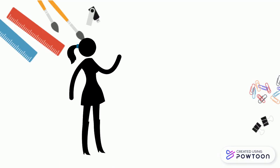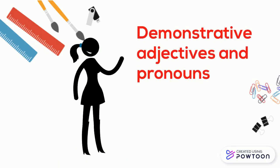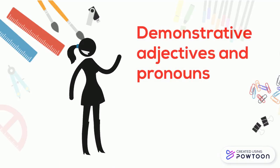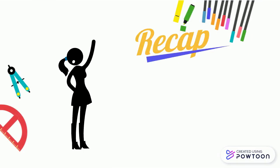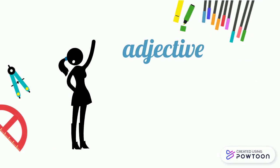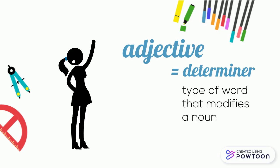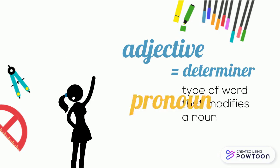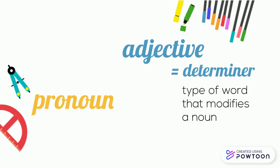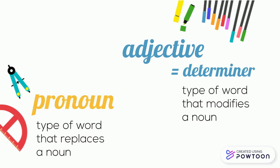Bonjour. Today we are going to talk about demonstrative adjectives and pronouns. First of all, a quick recap. An adjective — we can also talk about the determiner in this case — is a type of word that modifies a noun, whereas a pronoun is a type of word that replaces a noun.